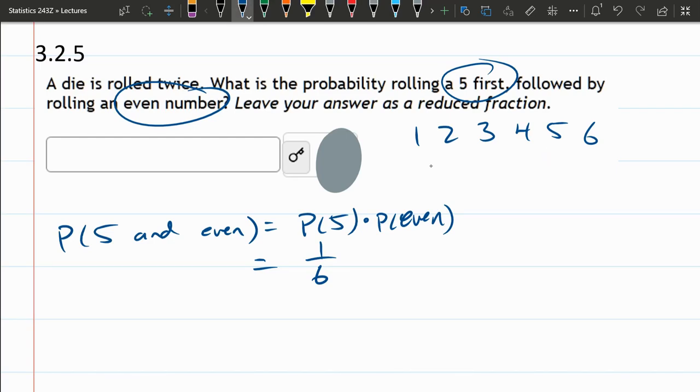Now, even - there's three evens, so that's 3 out of 6.